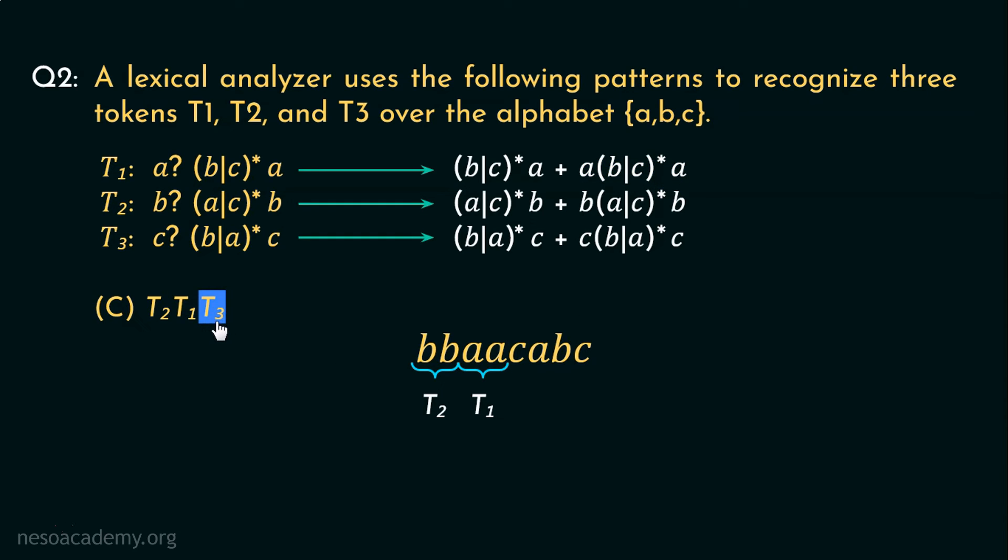Now the next one is T3. Observe the remaining portion of the string. It is having C, A, B, C which can be generated from this regex portion of T3. Right? So using option C, we also can represent this string.